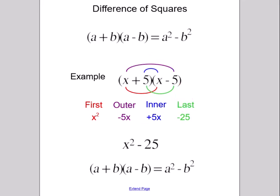The two middle terms plus 5x and minus 5x cancel each other out. When simplified, the result is x squared minus 25, which follows the special formula.